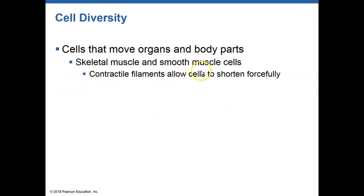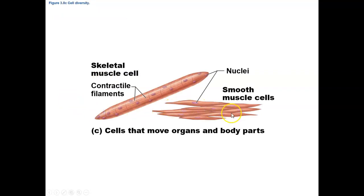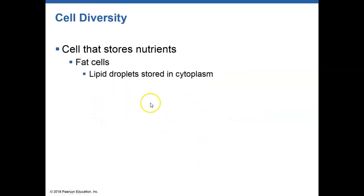We have skeletal and smooth muscle, as well as cardiac muscle. Muscle tissue functions in contraction and relaxation and helps in movement of materials. Skeletal muscle moves the body, smooth muscle moves materials within the body, and cardiac muscle moves blood throughout the body.